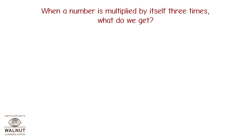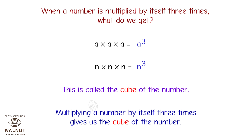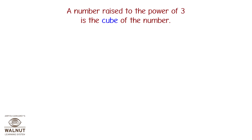When a number is multiplied by itself 3 times, what do we get? a into a into a is equal to a raised to 3. n into n into n is equal to n raised to 3. This is called the cube of the number. Multiplying a number by itself 3 times gives us the cube of the number. A number raised to the power of 3 is the cube of the number.